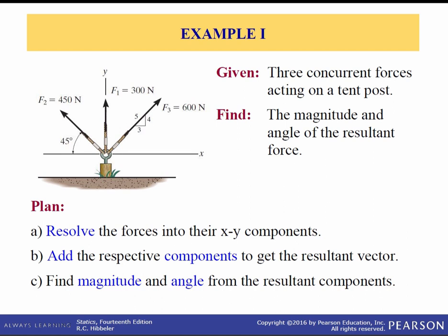Let's do an example. There are three concurrent forces acting on this tent post. F1 is 300 newtons and it's all in the y direction. F2 is 450 newtons at 45 degrees in the second quadrant — I already have a coordinate system labeled. F3 is in the first quadrant, 600 newtons, on a 3-4-5 triangle. We resolve each force into its x and y components, add the respective components, and then find magnitude and angle if needed.